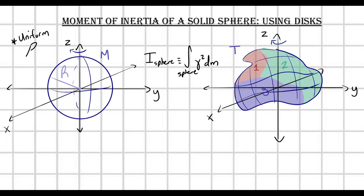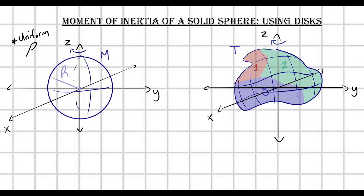However, this is a little inefficient. We would have to end up constructing a volume integral, convert this volume integral into spherical coordinates, and do all of that — which I'll probably do in the next video for completeness. But we can be a little more clever about this. Specifically, we can build this sphere up with a bunch of little infinitesimal disks.